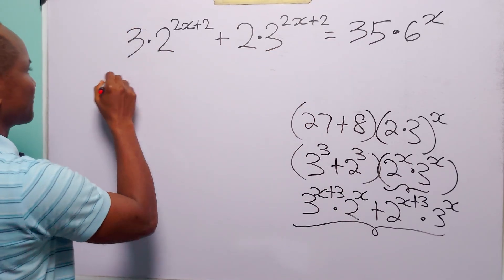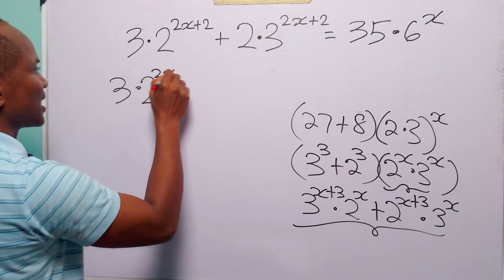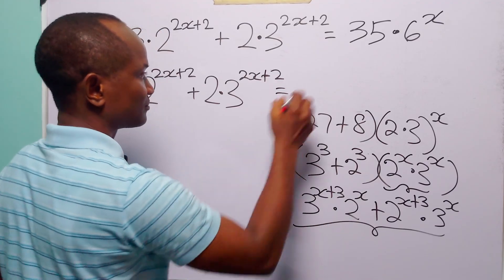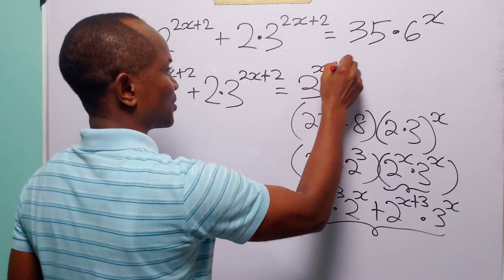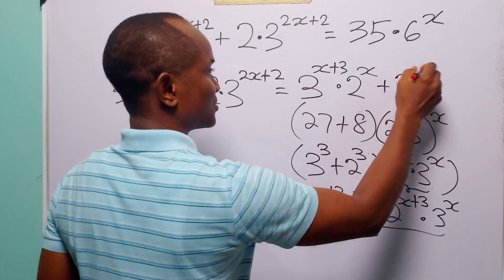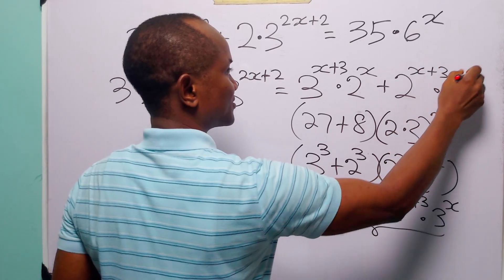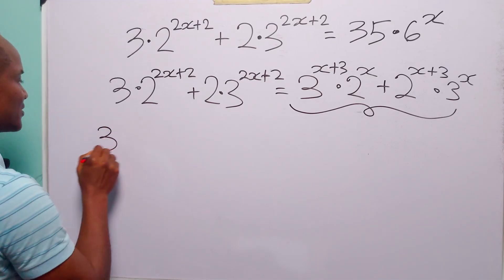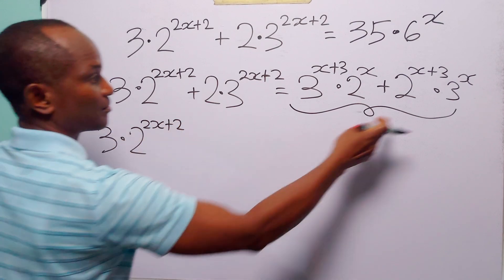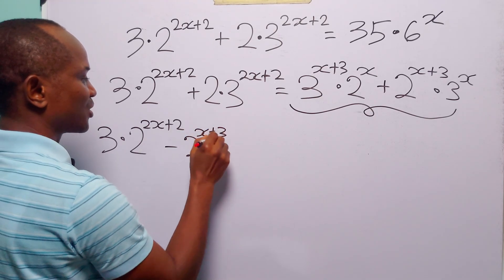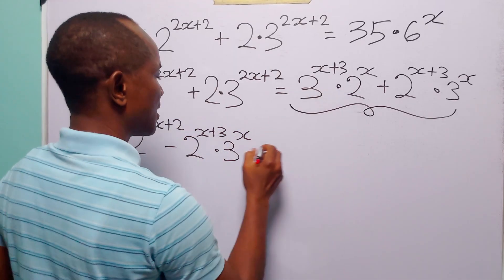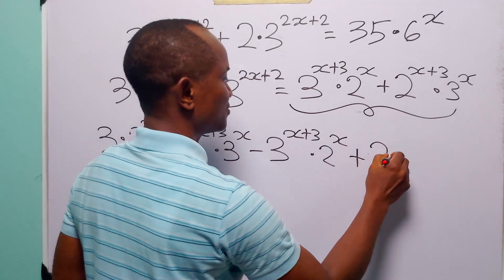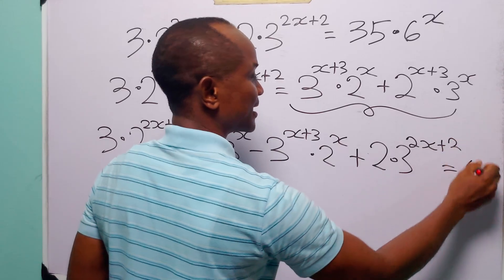Now we replace that term with these two expressions. The equation becomes: 3 times 2 to the power 2x+2 plus 2 times 3 to the power 2x+2 equals 3 to the power x+3 times 2 to the power x, plus 2 to the power x+3 times 3 to the power x. We then move these two terms over to the left hand side, giving us an equation equal to 0.